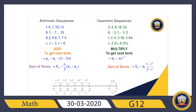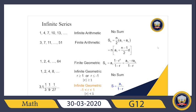For arithmetic sequences we add, so we have a constant which is d. In geometric sequences we multiply to find the next term, so we have a constant which is r. We also have infinite series, so instead of having a finite number of terms we have an infinite number of terms.